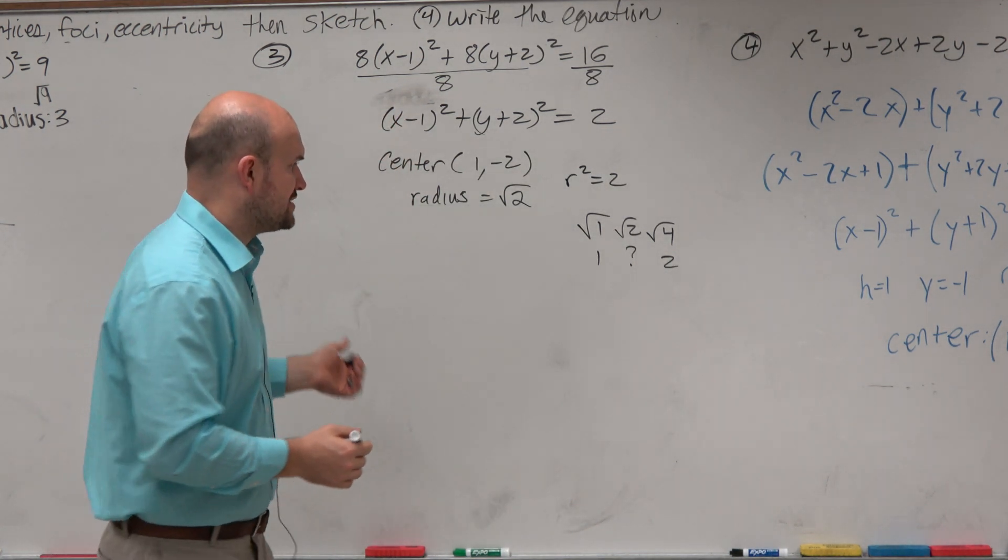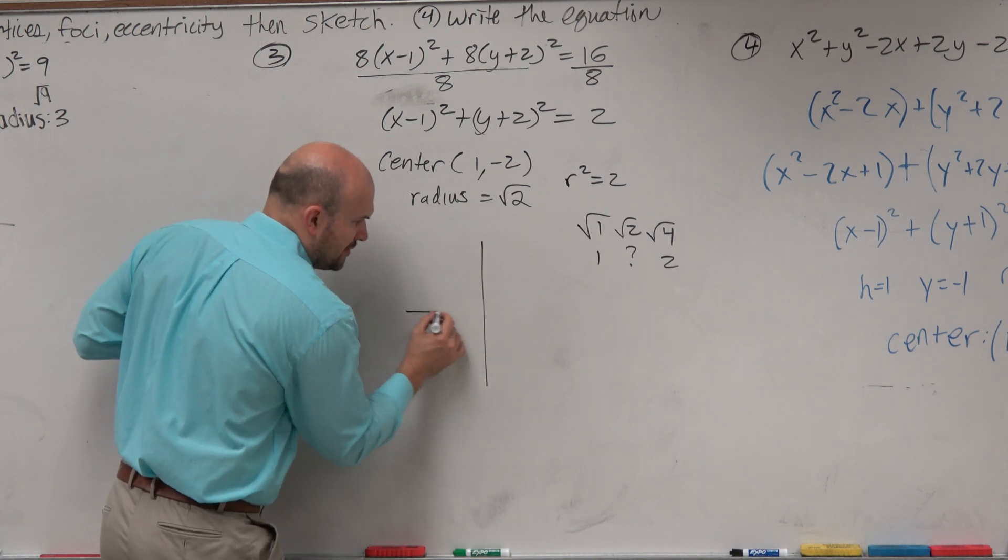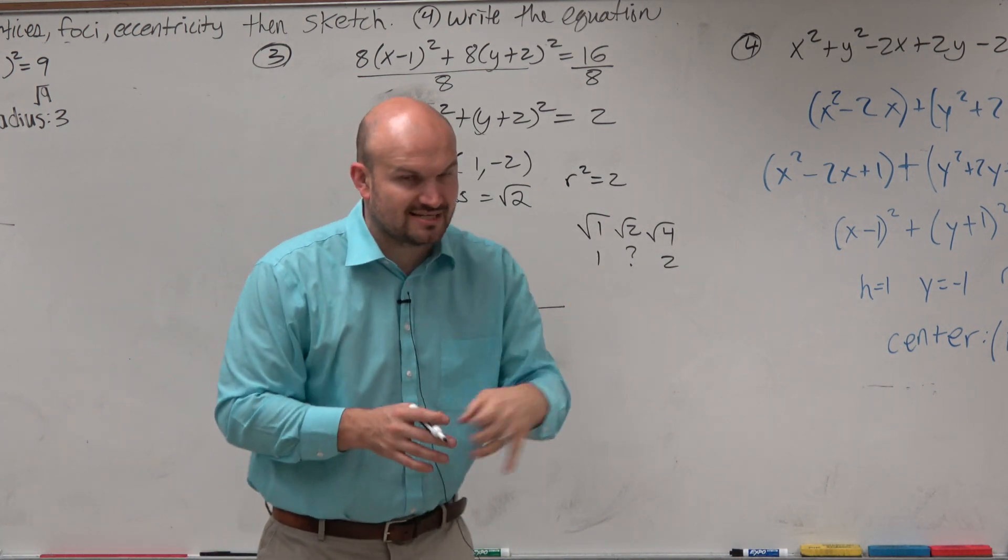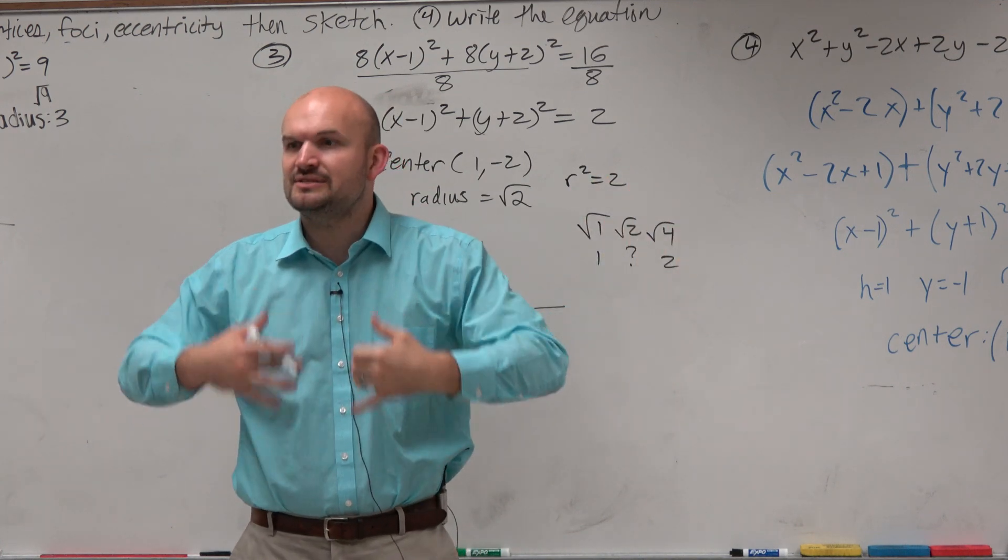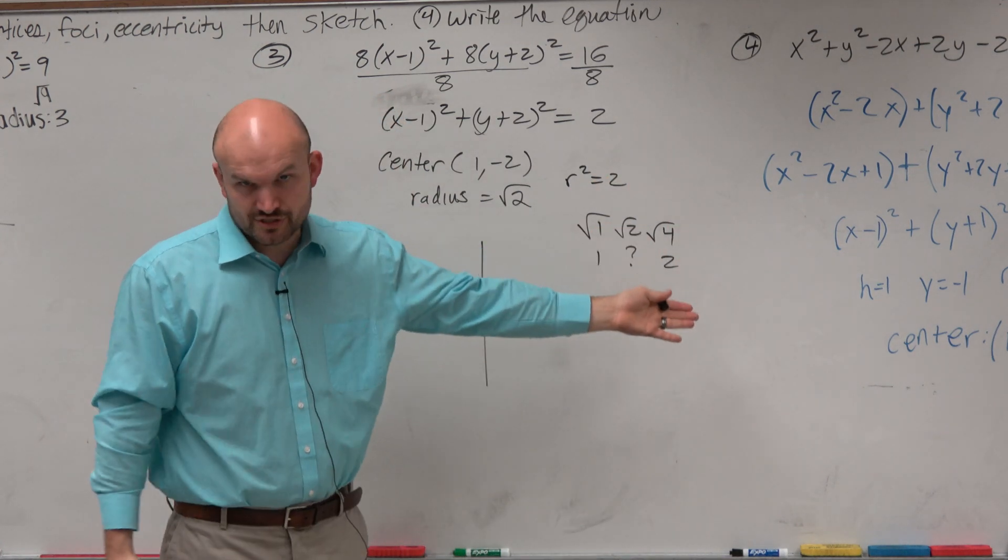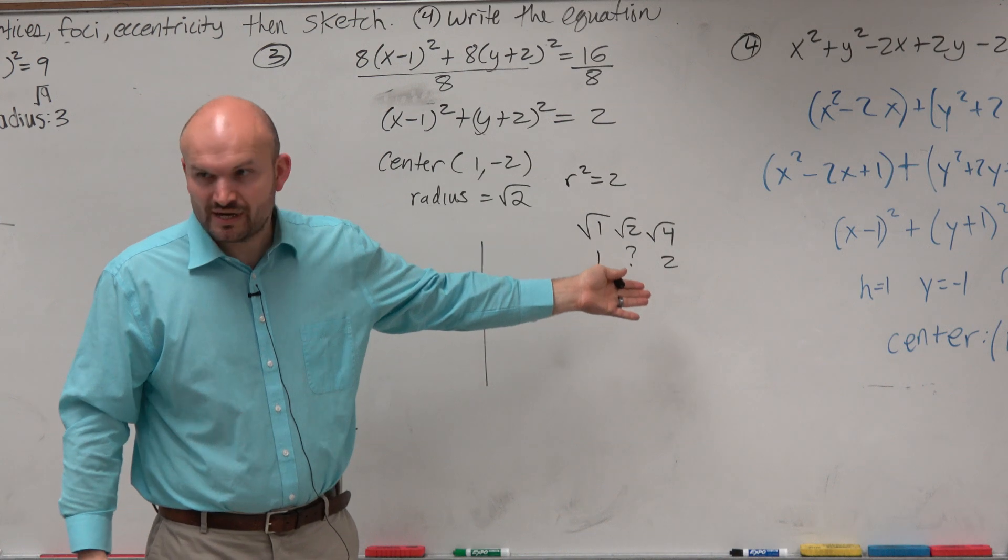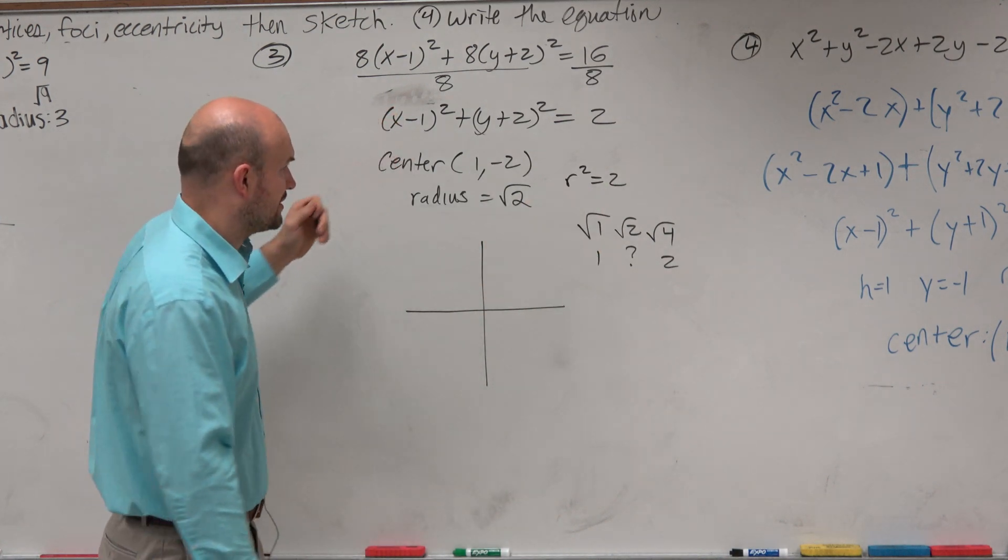So when I'm asking you to sketch your graph, I don't need you to be perfect. I'm not going to walk around with a magnifying glass and make sure you're exact. If I ask you to sketch, I just need it to be between 1 and 2. As long as you're not giving it to me as 3 or some other crazy numbers, we're going to be fine.